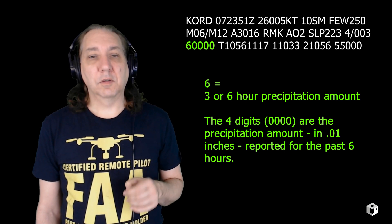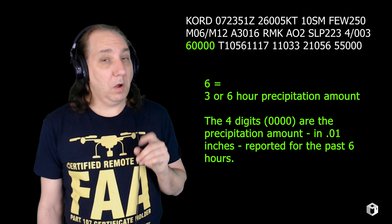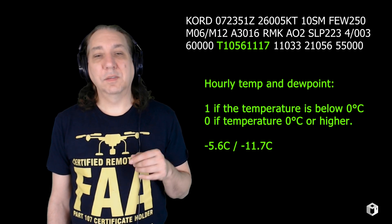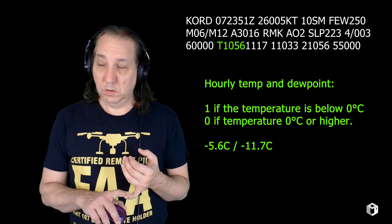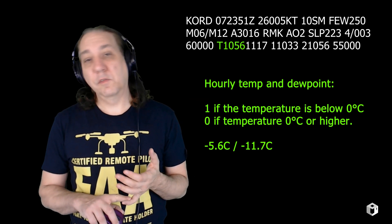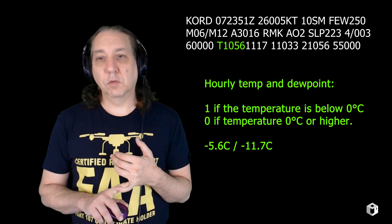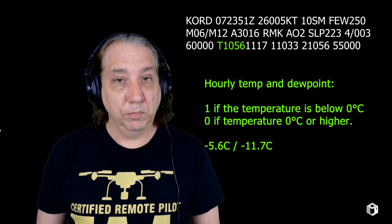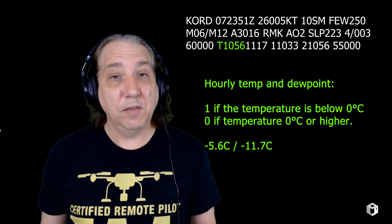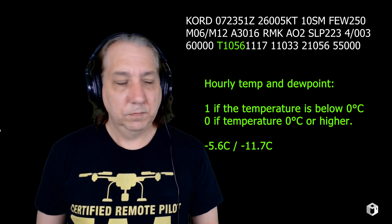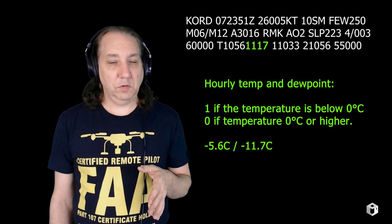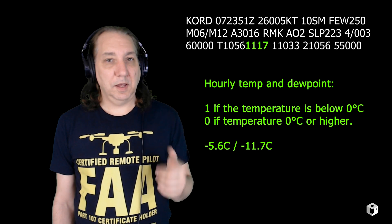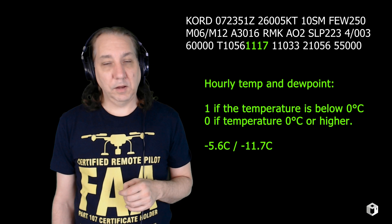60000 — these are inches of rain: precipitation amount in 0.01 inches for the past six hours. T10561117 is the hourly temperature and dew point. There's a one if the temperature is below zero degrees centigrade and a zero if it's zero degrees centigrade or higher. The T means it's the hourly temperature and dew point. The one means the temperature is below zero degrees centigrade. T1056 means negative 5.6 degrees centigrade. That second section — 1117 — the preceding one means it's a negative number, so this is negative 11.7 degrees centigrade for the dew point.